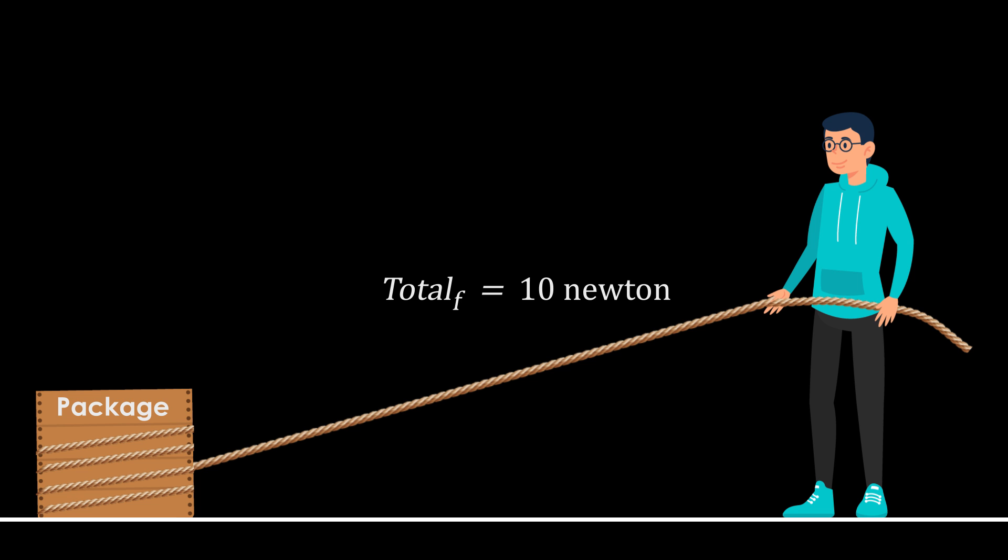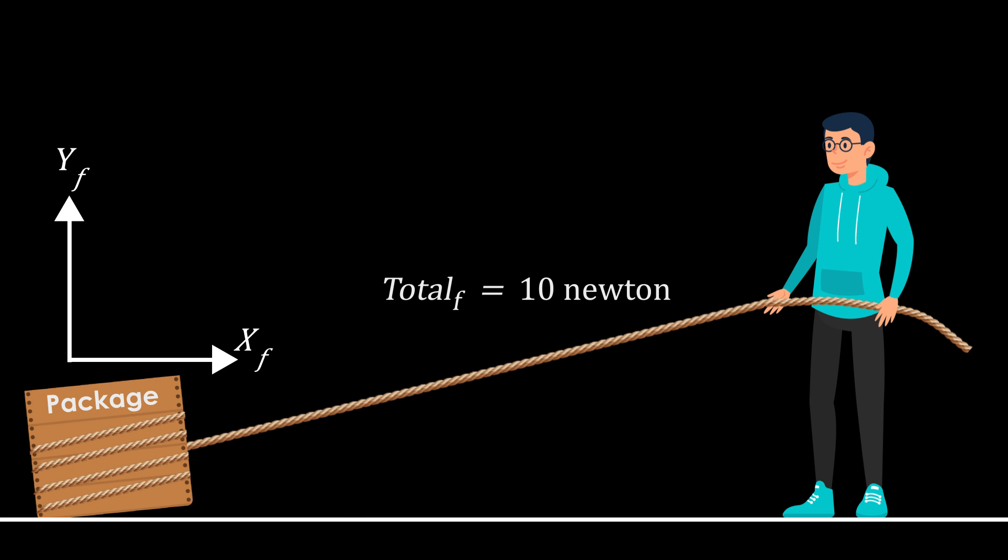You can attach a rope to it and you can try lifting it. Now, let's say you are putting a 10 newton force. Newton is a unit of measure for force. And then there is some angle. Let's say a 30 degree angle. Now part of this force goes into the x direction and part of that force goes into the y direction.